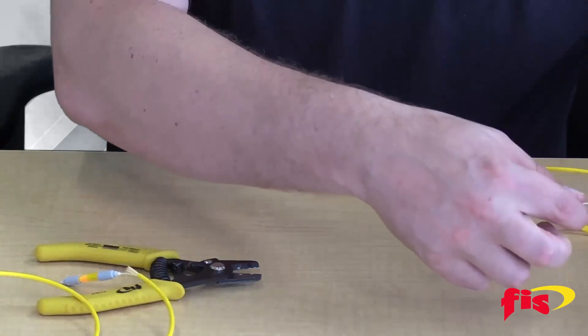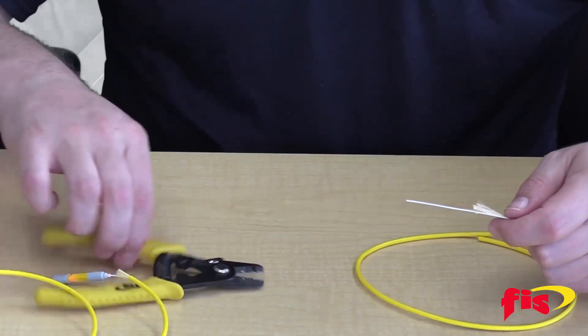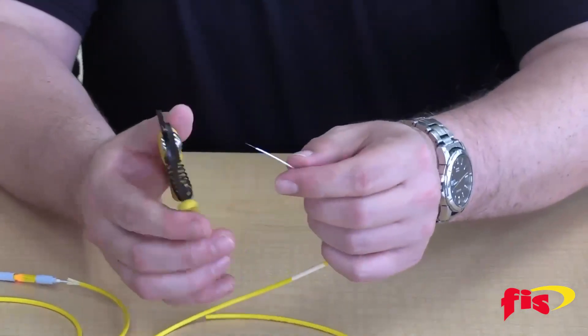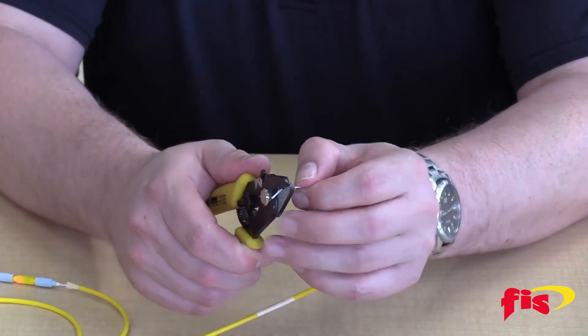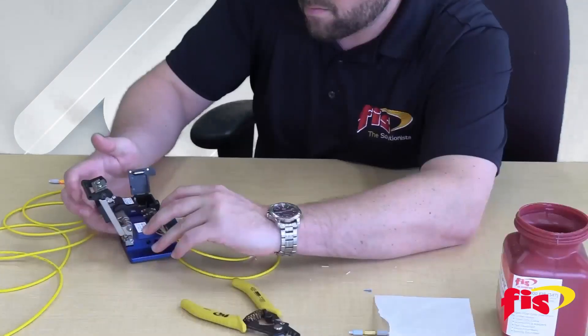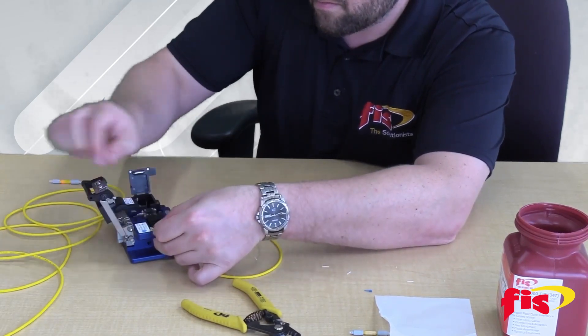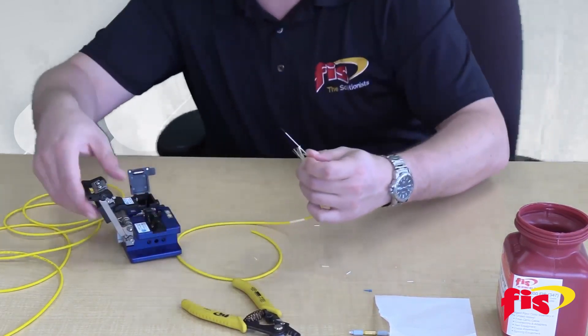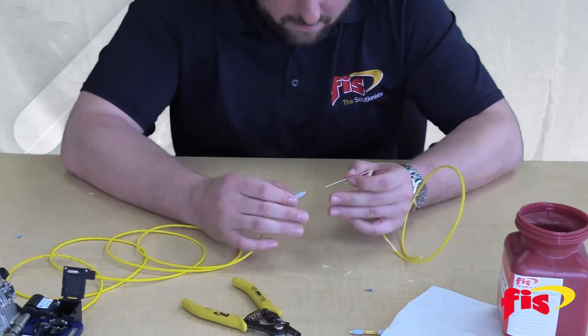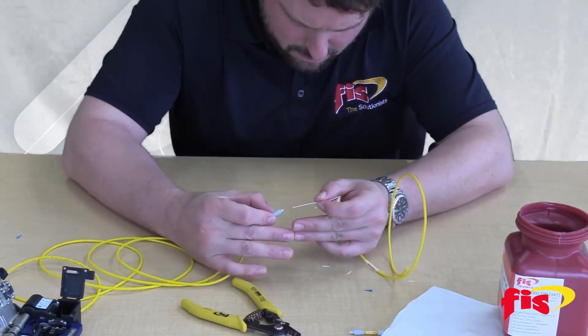Do the same thing on the opposite side where we strip off our 900 micron buffer, then we strip off our 250 acrylic, and then we cleave. Now insert the other fiber into the capsule the same way as you did the first.